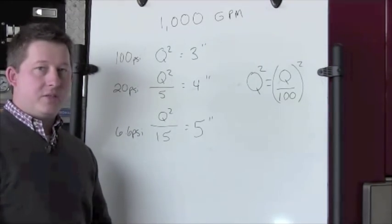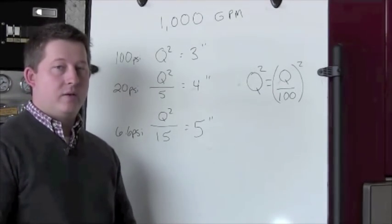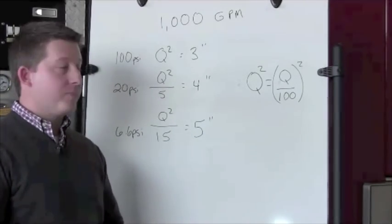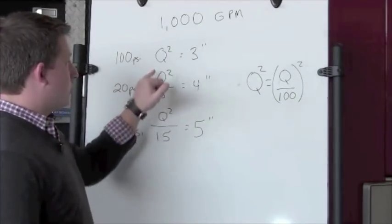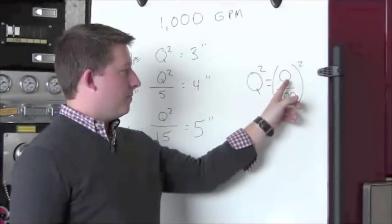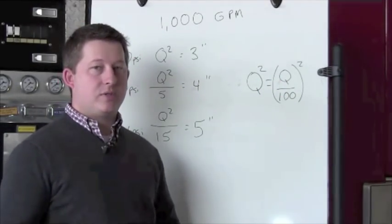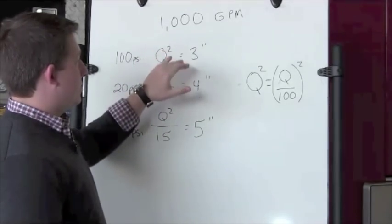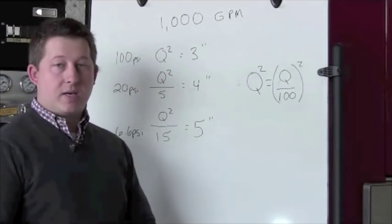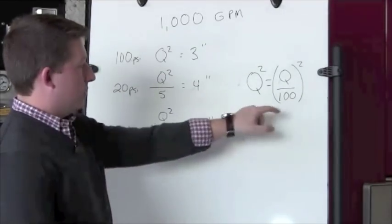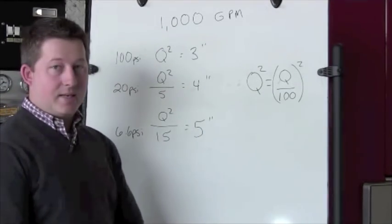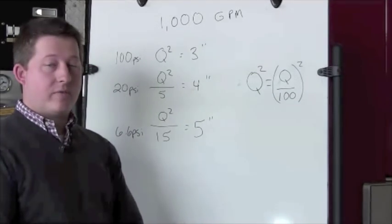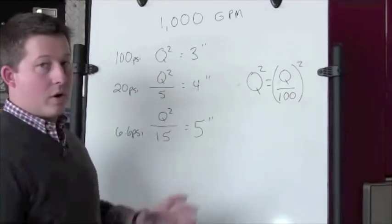This is something pretty easy to do on the fire ground in your head — the condensed Q method. We generally use this for three inch, four inch, and five inch supply lines. Q squared is the quantity of water divided by 100, squared — so it's in hundreds of gallons per minute. For example, if we're flowing 1,000 GPM through a three inch line, Q is 1,000 divided by 100, which is 10. Ten squared equals 100, so we have 100 psi friction loss per 100 feet in a three inch line.